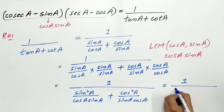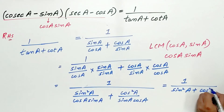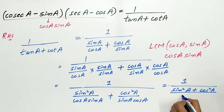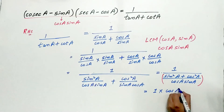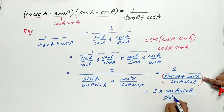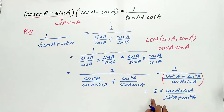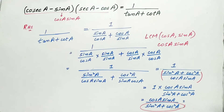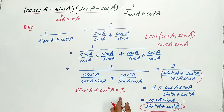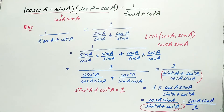So we get (sin²A + cos²A) divided by (cos A times sin A). Since there is a fraction in the denominator, 1 multiplied by cos A times sin A divided by (sin²A + cos²A). Now, sin²A + cos²A equals 1, so substituting 1: this gives cos A times sin A divided by 1, which equals cos A times sin A.